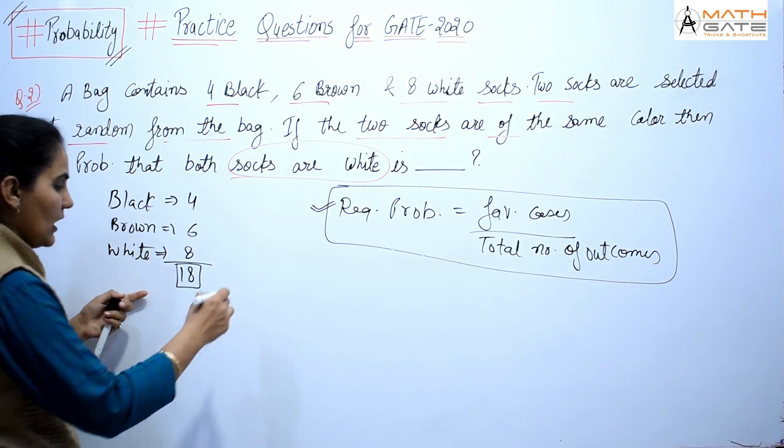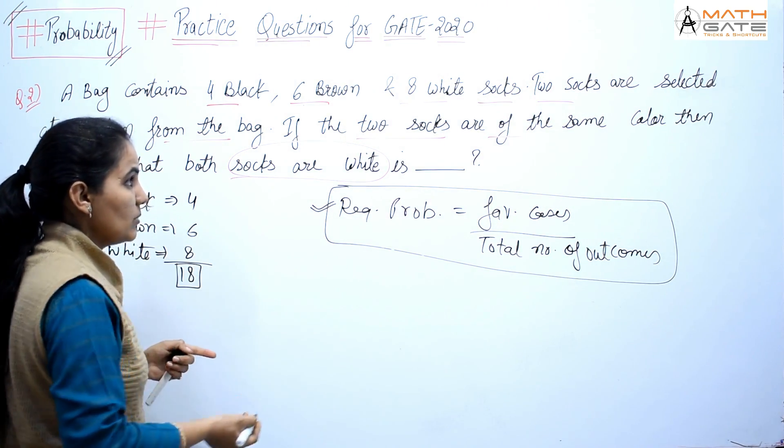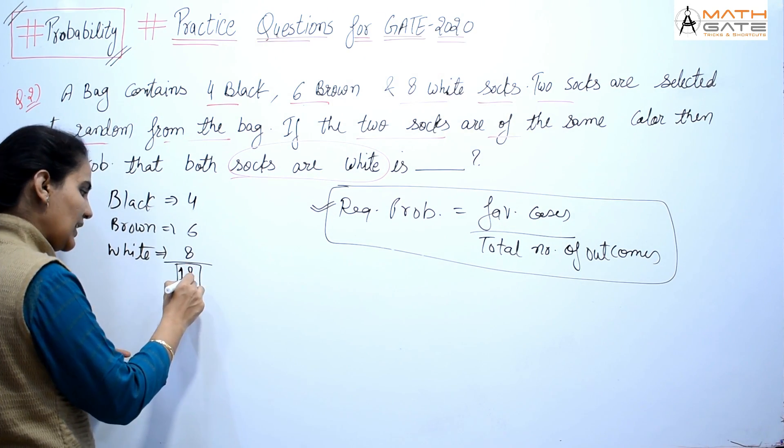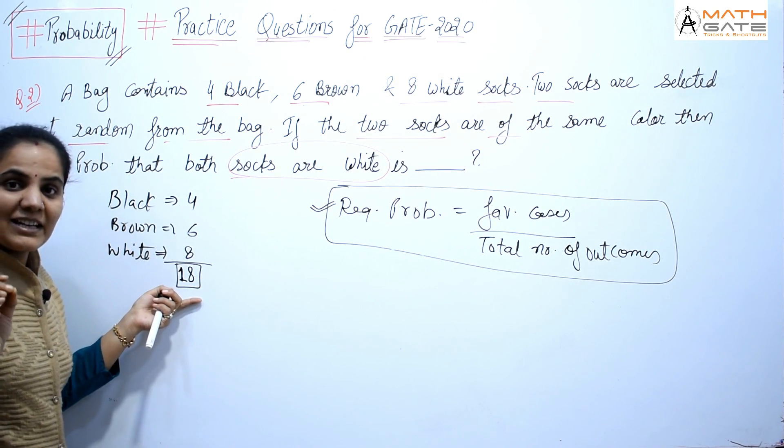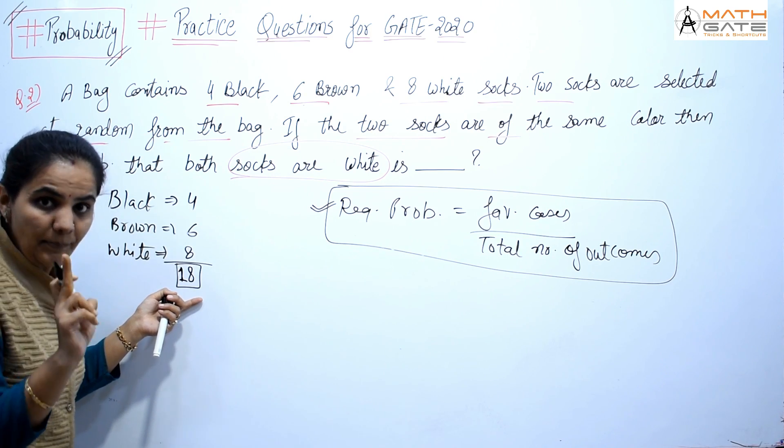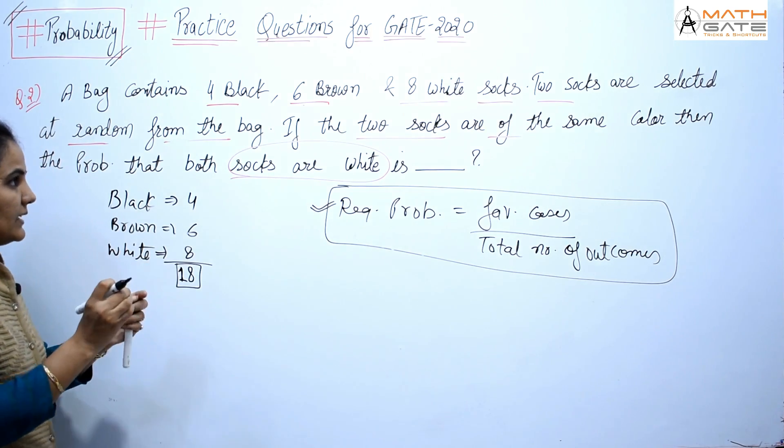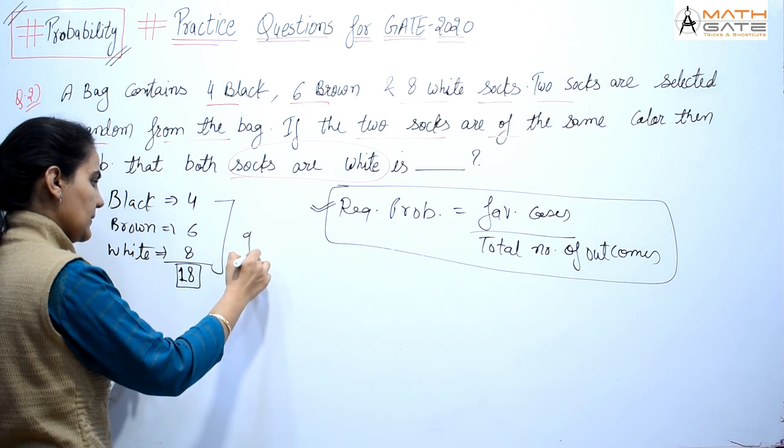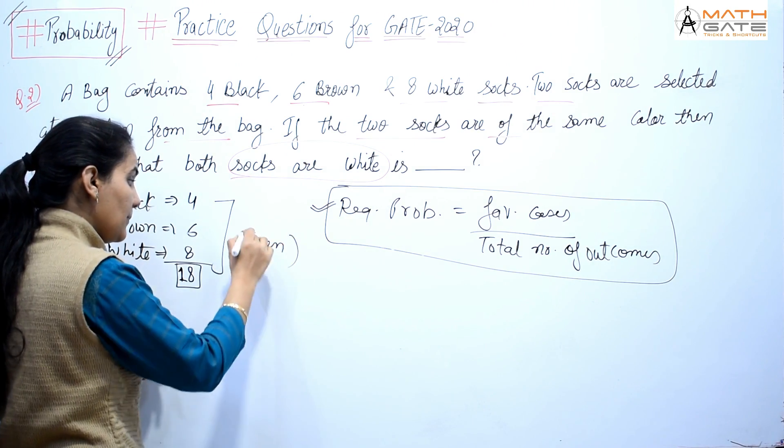Now if we talk about total number of outcomes, the total number of socks 18 is not the total number of outcomes, right?